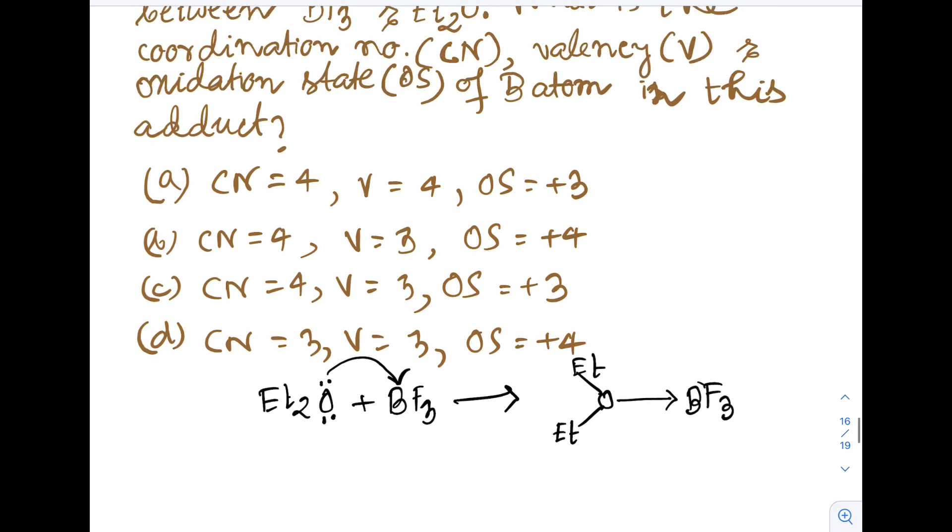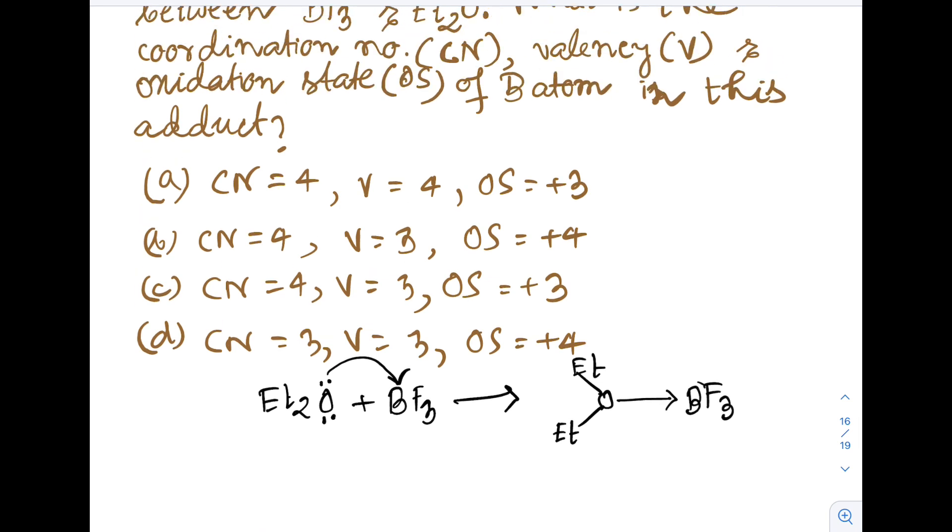Et2O will donate its lone pair to the vacant p orbital of boron to form this adduct. The coordination number of boron - how many atoms are directly attached? Here, 3 fluorine and 1 oxygen, so the coordination number will be 4. Valency equals the coordination number, so valency of boron is 4.